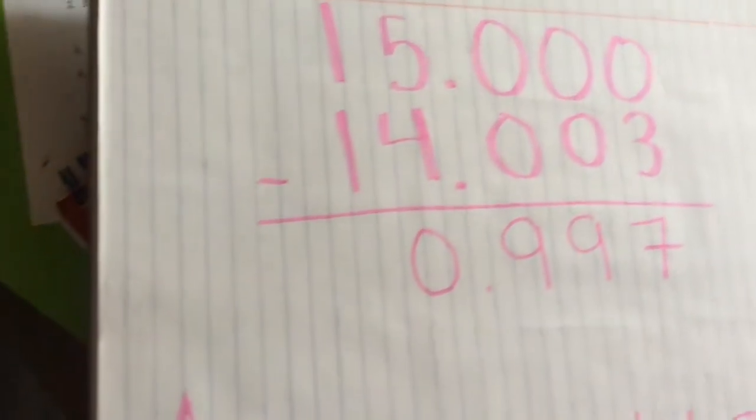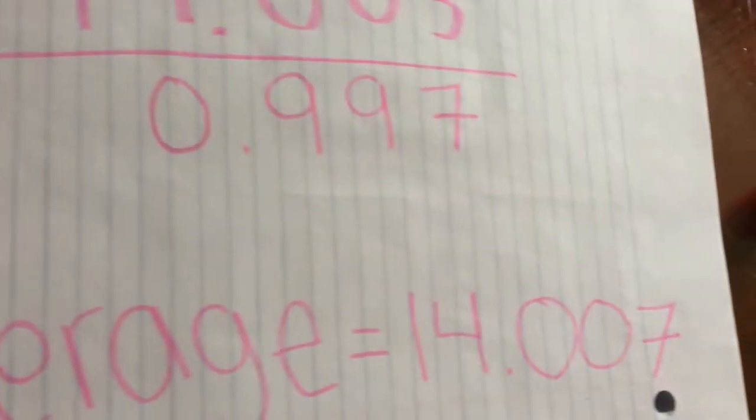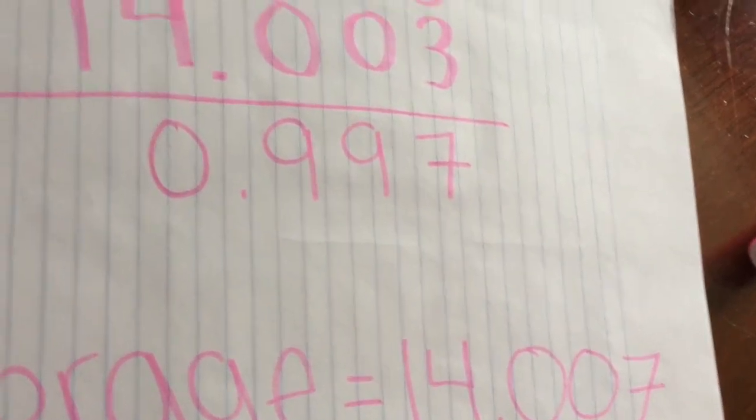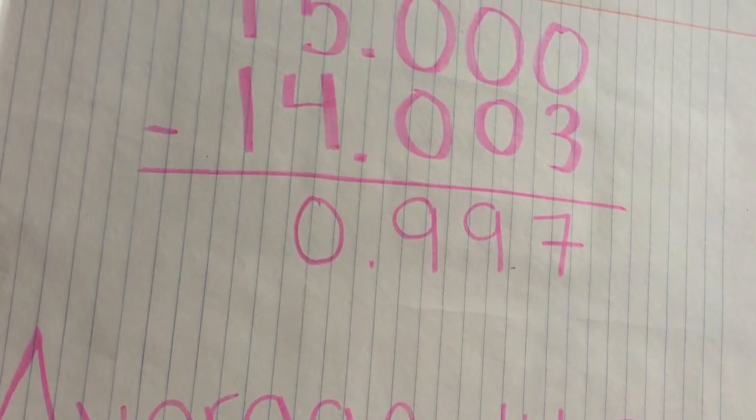The difference between the atomic masses of N14 and N15 is 0.997. The average atomic mass of N14 and N15 is 14.007.